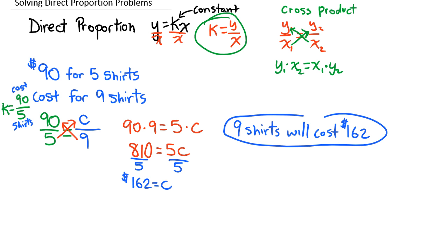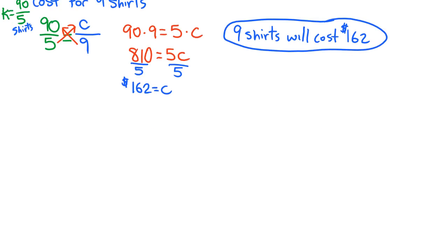Now there's one other way we can approach this, and that is by finding our constant of proportionality first, and then using that in order to write an equation for the second part.